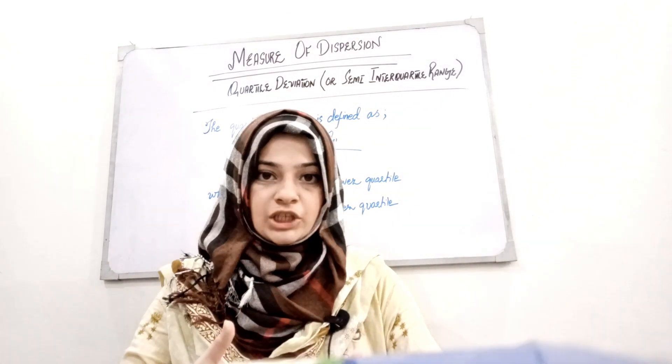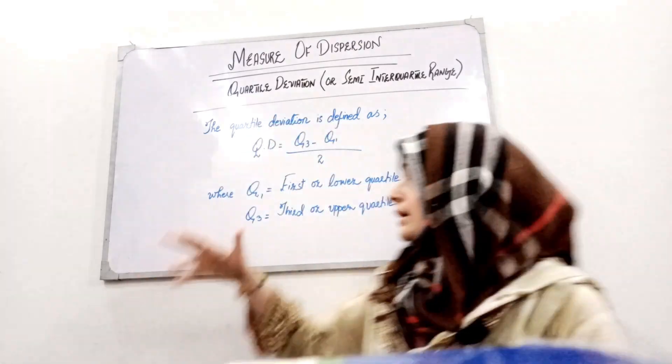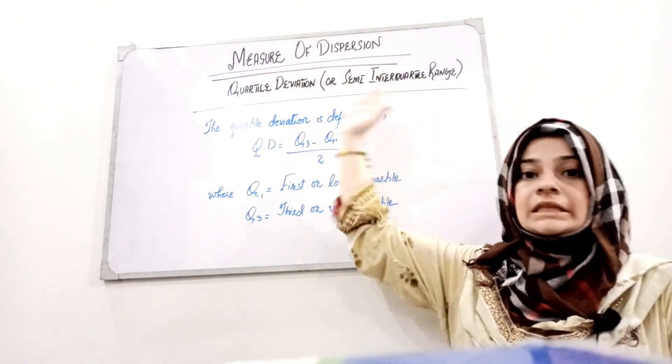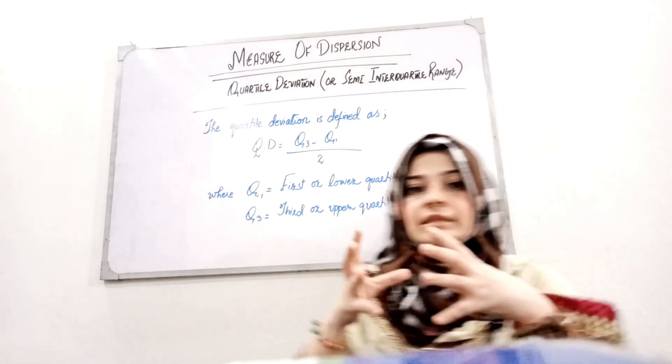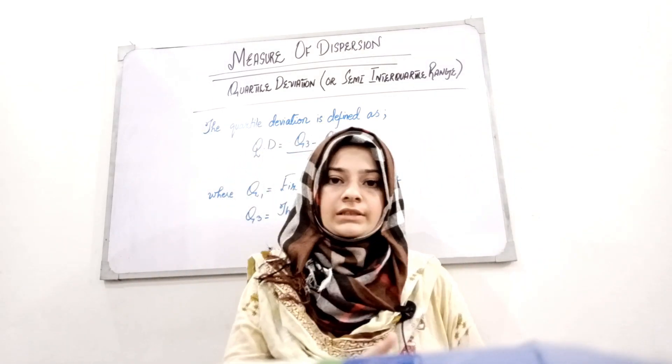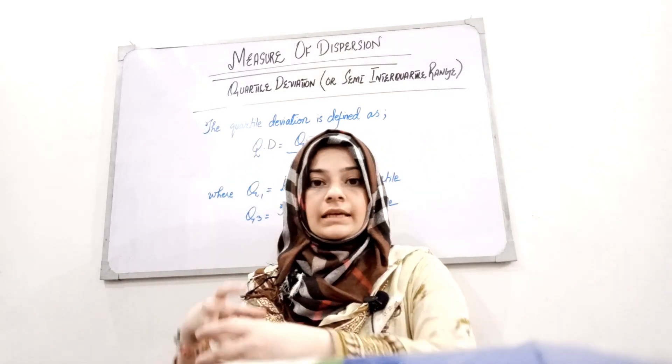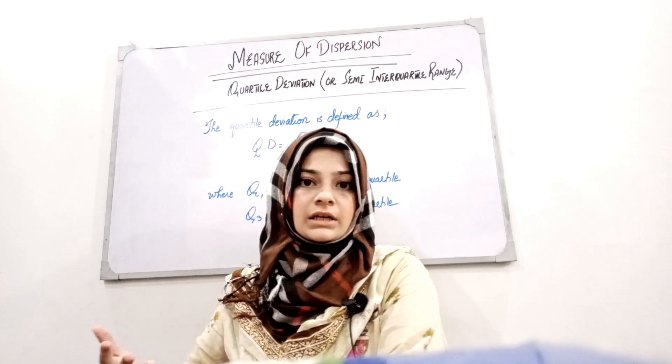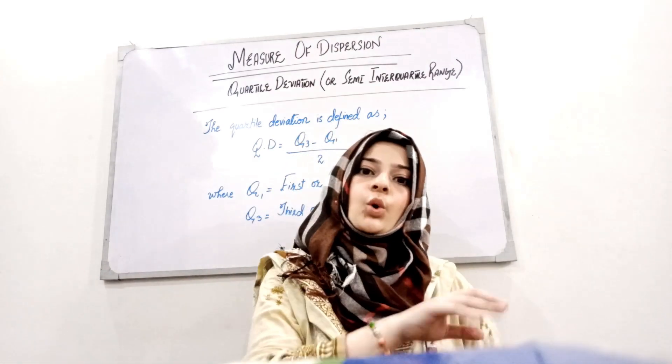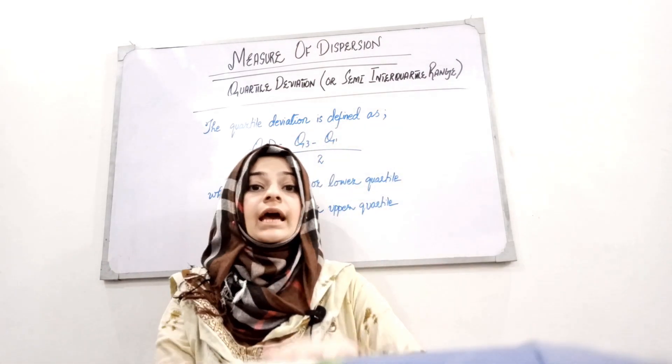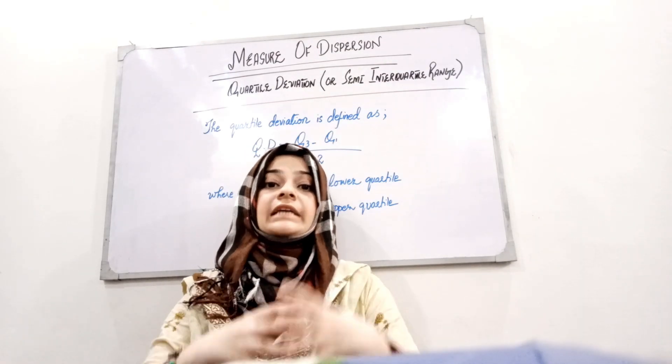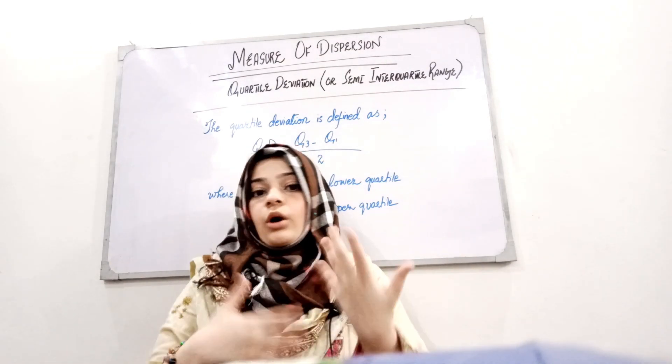is the quartile deviation? It is also known as the semi-inter-quartile range because here we are taking the difference between the highest quartile, the upper quartile which is Q3, and the lowest quartile which is Q1. We are going to find out the deviation, or in...